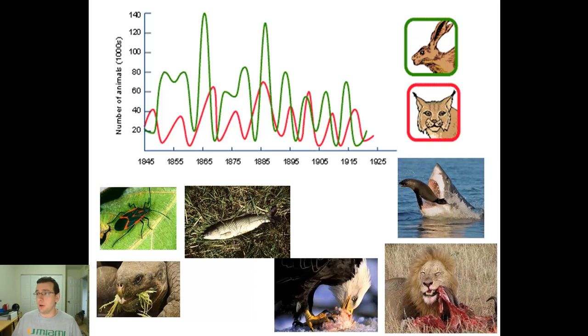And as the predators sink and die off because their carrying capacity went down, now all of a sudden the hare is just like, okay, nobody is eating us anymore, so their carrying capacity goes up. Because now the predation went down. So now their numbers explode. But now that their numbers explode, there's more food for the predators, and the cycle restarts.